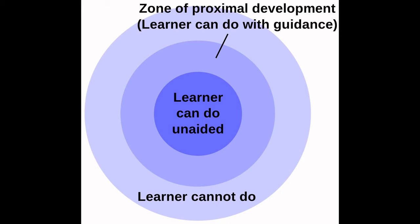If we think about math, for example, many learners can do a lot of different math concepts unaided. Then there is the space where people can do things with guidance — that's where the education role is: to figure out what you can do with guidance and how to structure that guidance to expand the learner's capability. Last but not least, there's the outer ring of things the learner cannot do at all.